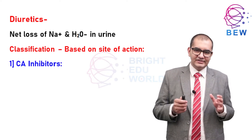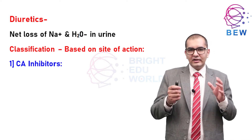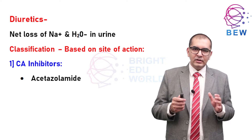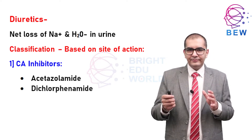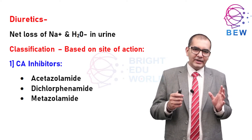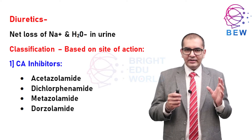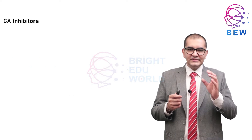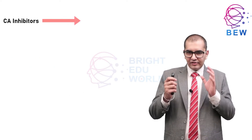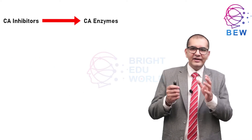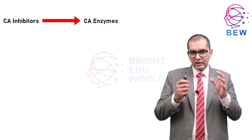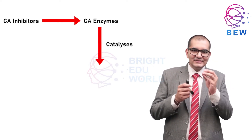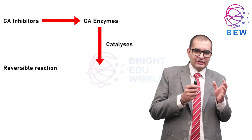Under carbonic anhydrase inhibitors we have acetazolamide, dichlorphenamide, methazolamide, dorzolamide, and brinzolamide. These carbonic anhydrase inhibitor drugs act on the carbonic anhydrase enzyme. Carbonic anhydrase is an enzyme which catalyzes a reversible reaction.